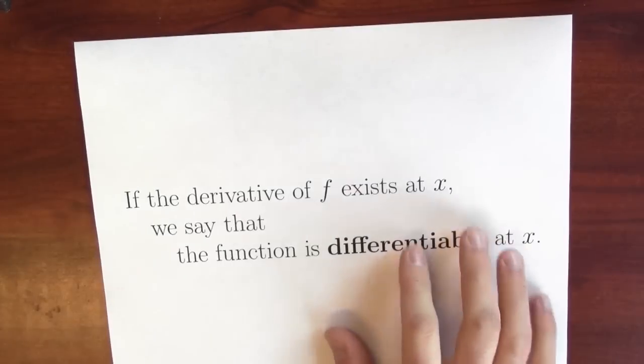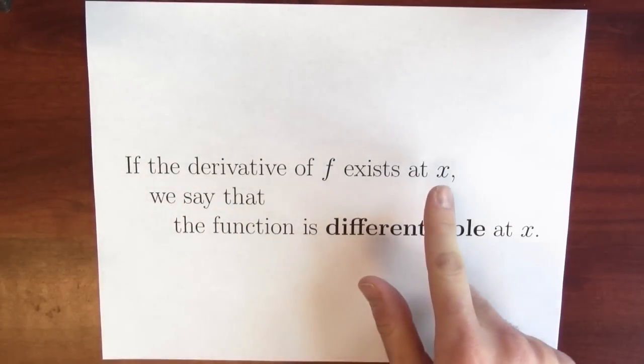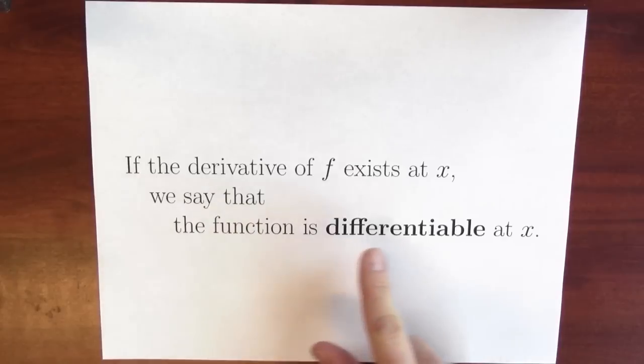When this limit exists, I'm going to say the function is differentiable. If the derivative of f exists at the point x, I'm going to say the function is differentiable at that point x.